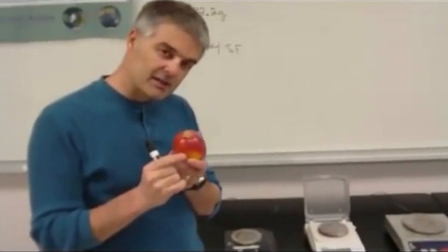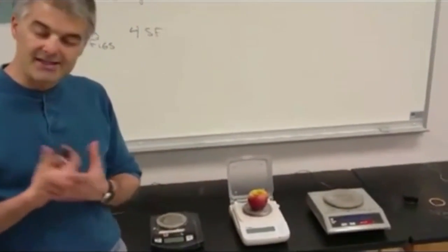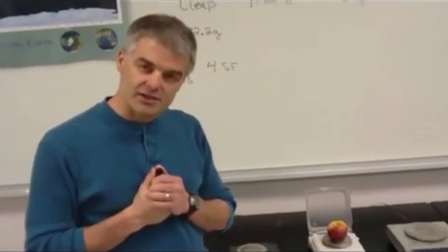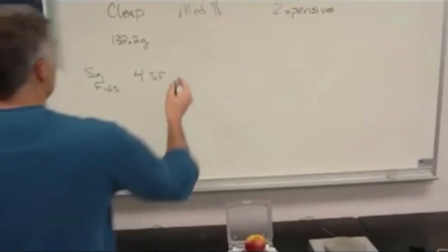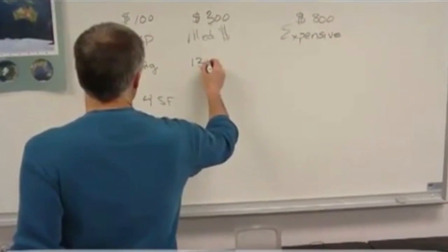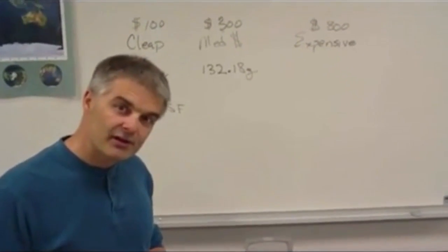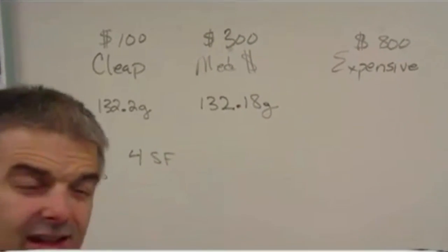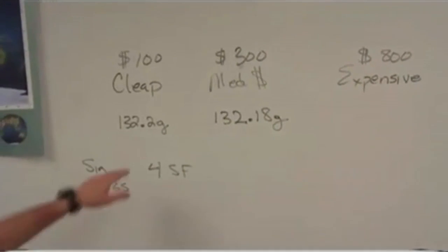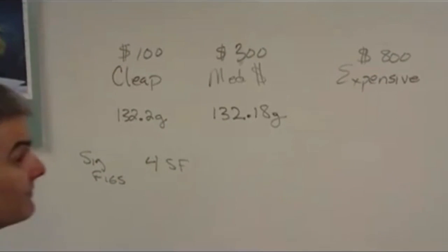Now I'm going to take the apple and I'm going to place the apple onto the medium price balance. Now, has the apple changed its mass? It should be the same. It's the same mass. You didn't take a bite. I see a different number on my balance. I see that it weighs 132.18 grams. Now, has the apple changed its mass? Well, it looks like it lost 0.02 grams. Yeah, that kind of looks like it, but can it lose mass? No, not just sitting there. Not just sitting there.